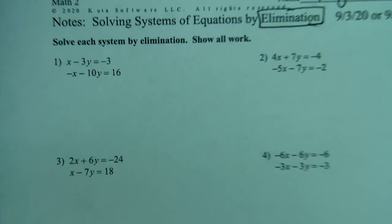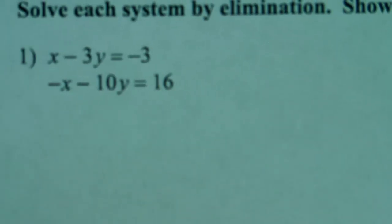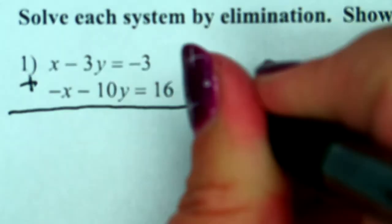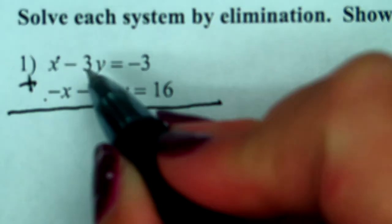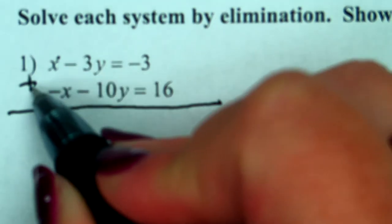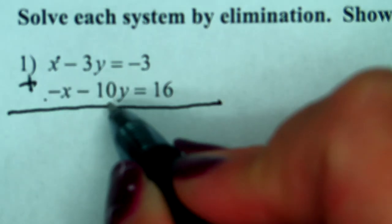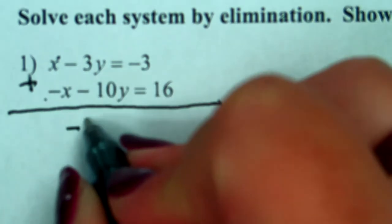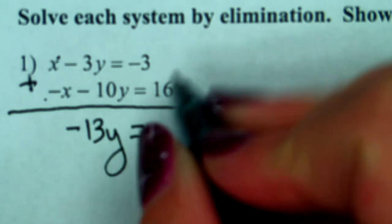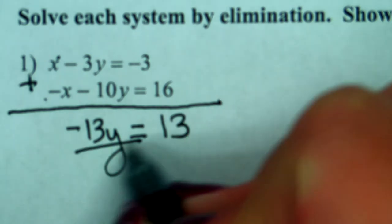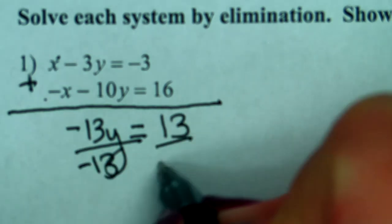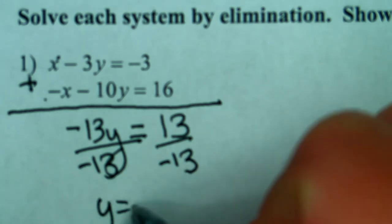We're going to focus in on the first problem. We're trying to eliminate one of the variables. If we add the two equations together, what's x plus negative x? Zero. What's negative 3y plus negative 10y? Negative 13y equals negative 3 plus 16, which is 13. Divide by negative 13, we get y equals negative 1.